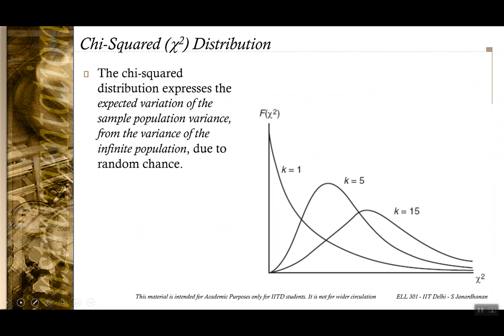The chi-square probability distribution is plotted with respect to k, the number of degrees of freedom, and it expresses the expected variation of the sample population variance from the variance of the infinite population. The probability is the area under the curve — not the curve value itself.